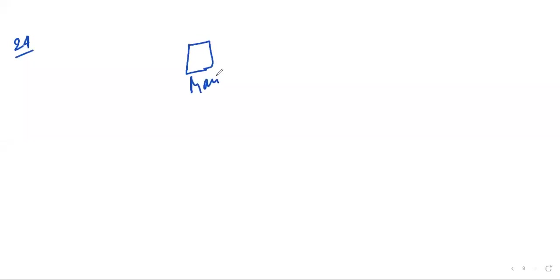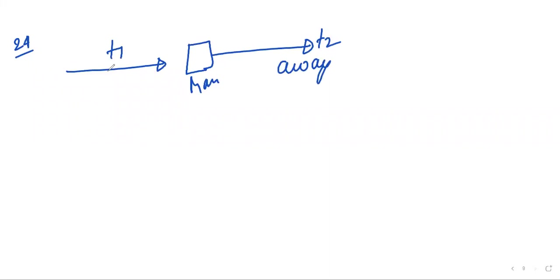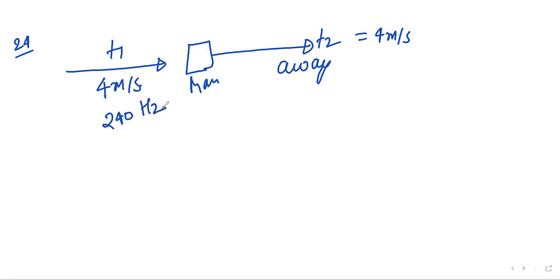Question 24: A man is watching two trains — one leaving and one coming. One train T1 is coming towards him and train T2 is going away from him, both with equal speed of 4 meters per second. Each sounds its whistle at frequency 240 Hz. Velocity of air is 320 m/s. This question was asked in 1984 and 1997.